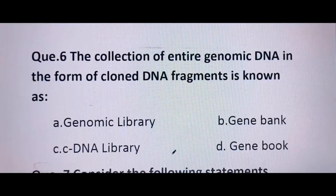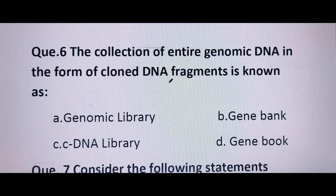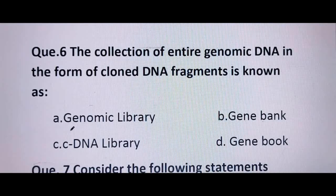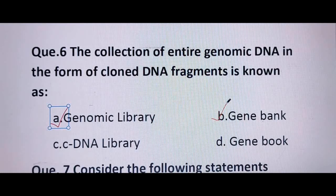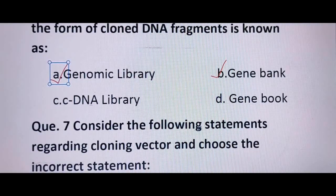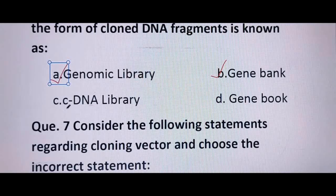Next question: the collection of entire genomic DNA in the form of cloned DNA fragments is known as — both A (genomic library) and B (gene bank) are correct options. When we collect the entire genomic DNA of any plant or animal it is known as a genomic library or gene bank. A cDNA library is when we store genomic DNA in the form of cDNA, or complementary DNA.